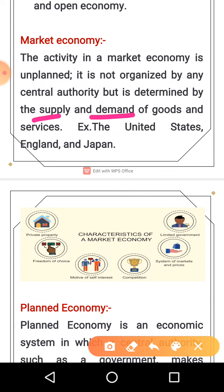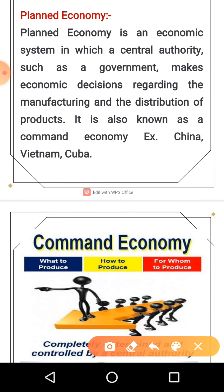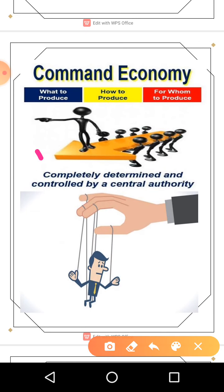In market economy, competition is very high because it works on profit. Next is planned economy — in planned economy, government decides everything. Social welfare is its main point, not profit. Examples of planned economy are China, Vietnam, and Cuba.